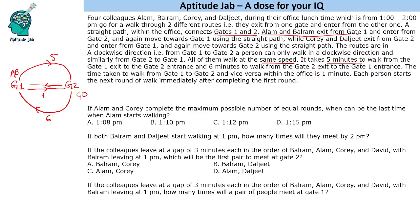Each person starts the next round of walk immediately after completing the first round, so they keep on moving continuously. A person starting from gate 1 will go to gate 2 and then come back to gate 1 and keep moving.